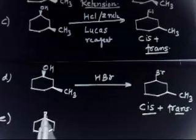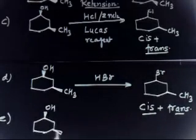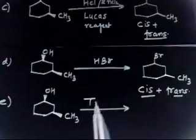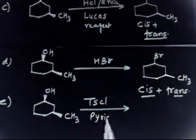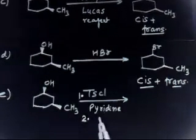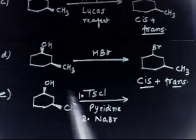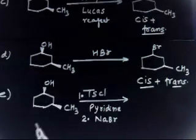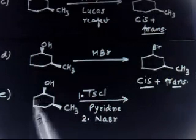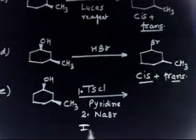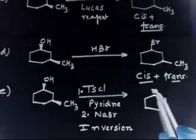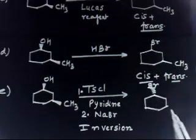Part E: the starting compound is cis, so OH and CH3 are both on the cis side. This compound reacts first with TsCl/pyridine and then with NaBr. In the first step, pyridine takes H⁺ and O⁻ attacks TsCl, forming OTs (tosylate), with no change of configuration. Then in the second step, Br⁻ attacks via SN2 from the backside — inversion of configuration — giving Br on the back side and CH3 on the other.